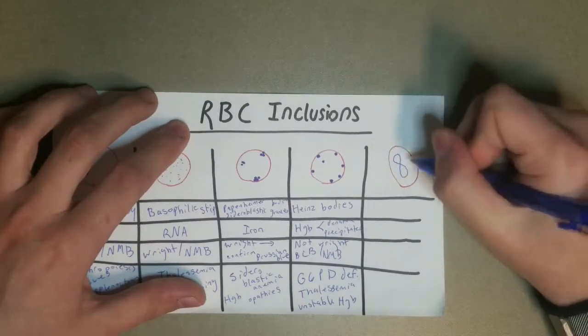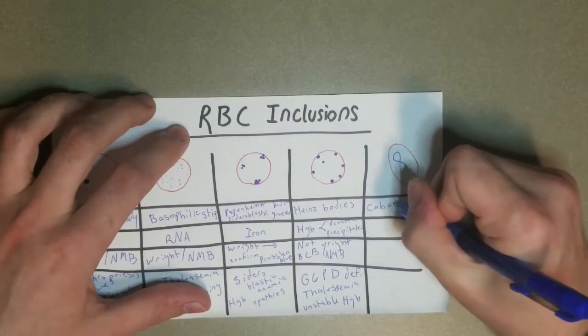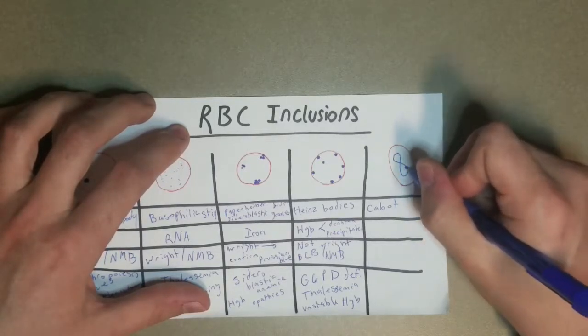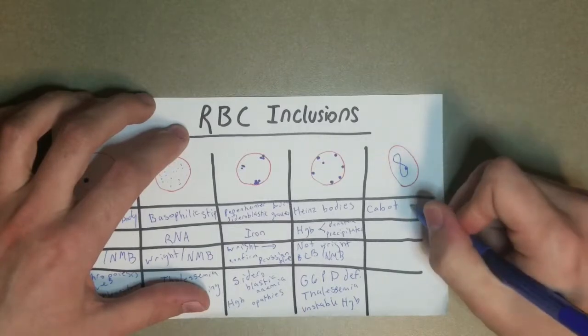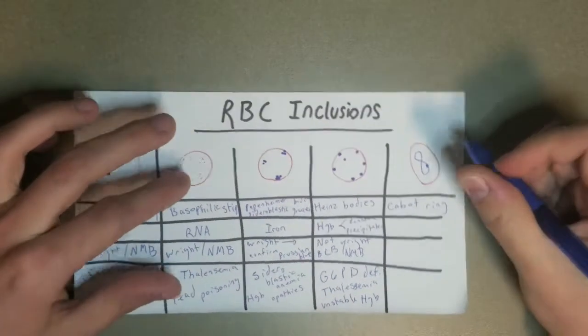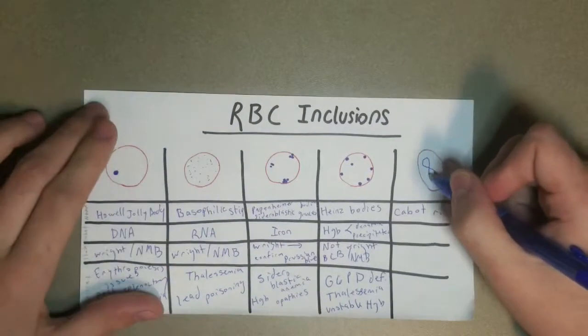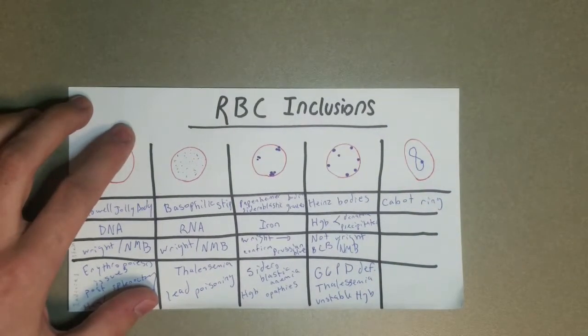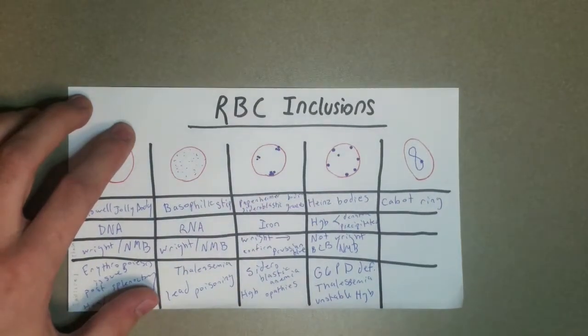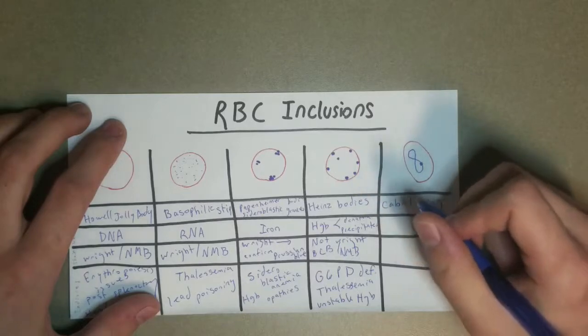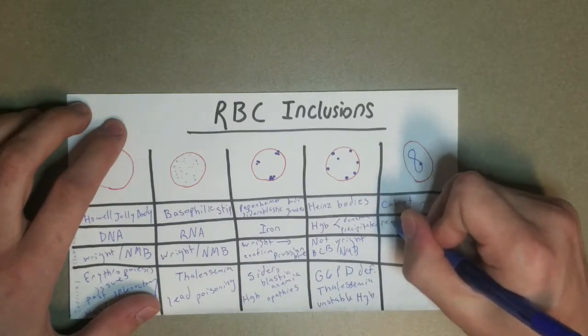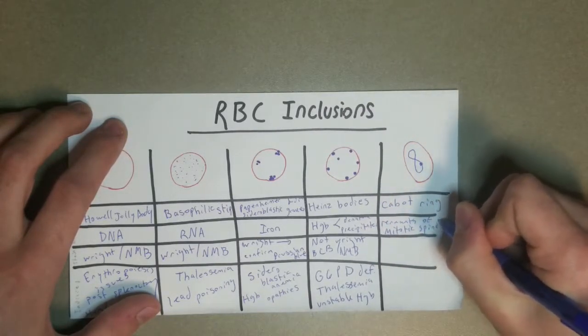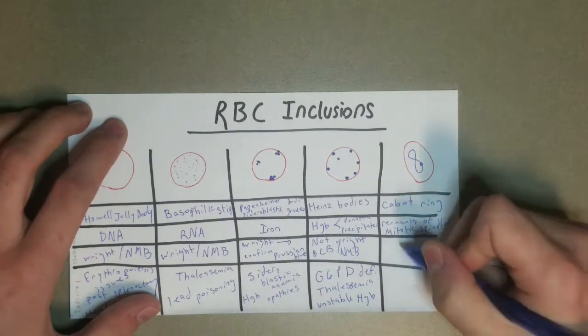But last but not least, we have the Cabot Ring. And these are much more rare than the other ones. I think I've done lab work for quite a while now. I think I've only seen maybe one or two ever. And, I don't know, the way I kind of remembered it was usually the figure eight shape kind of is elongated there. It looks like two carats, maybe. I don't really have a good way of remembering that one, I guess. So for Cabot Rings, you're going to see them. Oh I'm sorry, so what are they? They're remnants of mitotic spindle. Kind of just left behind, almost like an artifact.